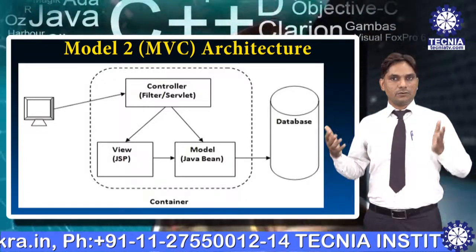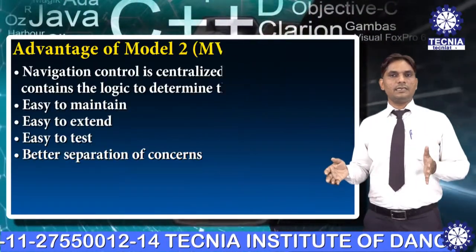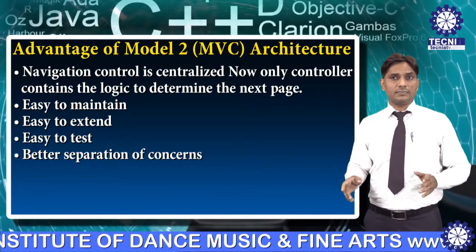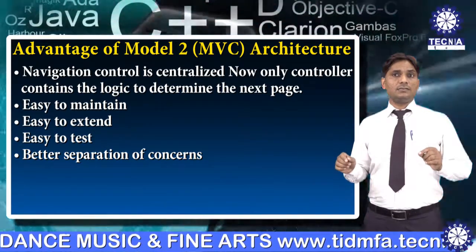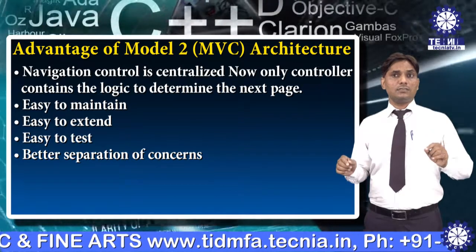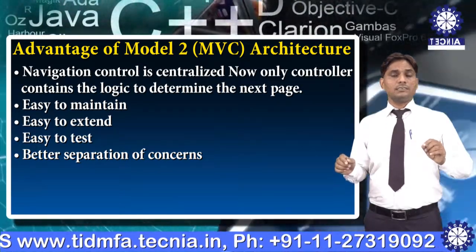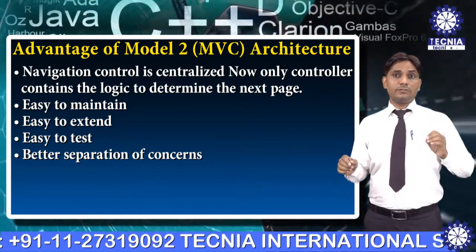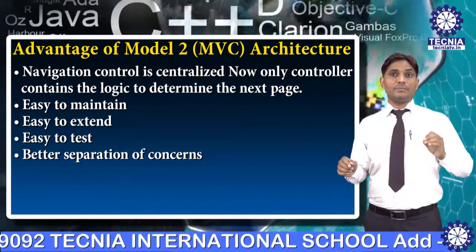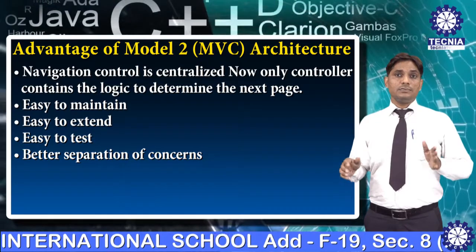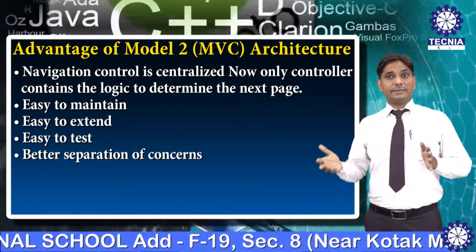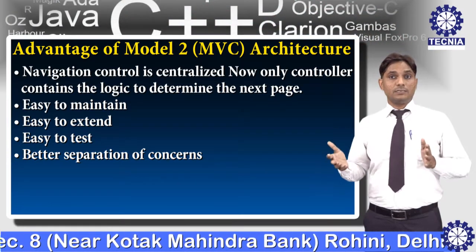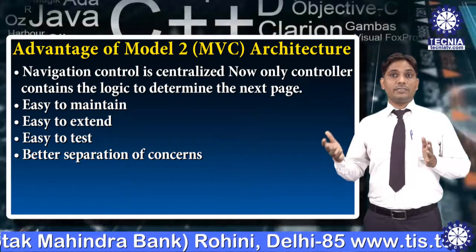There are various advantages of Model 2 MBC architecture. Number one advantage: navigation control is centralized — now only the controller contains the logic to determine the next page. Second advantage: easy to maintain. Third: easy to extend. Fourth: easy to test — we can test easily in the online web application.